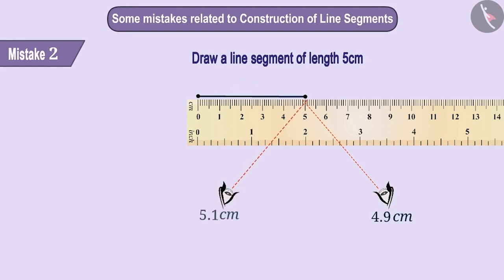Like Jai, some children are unable to draw a line segment of the correct measurement because these children do not carefully observe the mark while drawing a line segment. Therefore, while measuring length, it is important that we take special care in observing the mark.